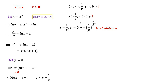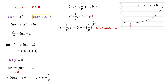We now have a clear idea of what the graph of y looks like. It decreases in the range (0, 1/e), reaches a local minimum at x equal to 1 over e, then increases for x greater than 1 over e. This is the overall shape of the graph of y.